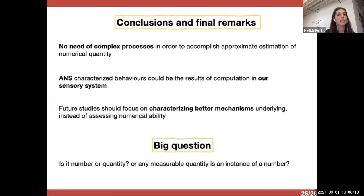And just, this is just to conclude, so maybe we need these complex processes in order to accomplish this kind of estimation. And maybe looking also more into our sensory system instead of more higher functional areas that are also less known would be better. And maybe also future studies should focus on characterizing better this mechanism and not only assessing the ability. And then there is this big question that continues to come to mind: is it number or quantity or if any measurable quantity is an instance of a number. So, these two, there is no opposition between them and that's all.